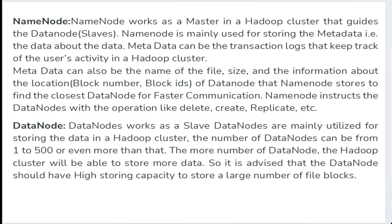So what is the role of the master node and the DataNodes? The NameNode works as the master node in the Hadoop cluster, guiding all the DataNodes. The NameNode is mainly used for storing metadata — that includes the name of the file, size of the file, location of blocks, and block IDs of the DataNodes.